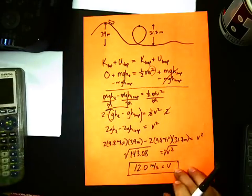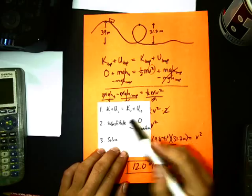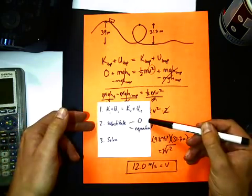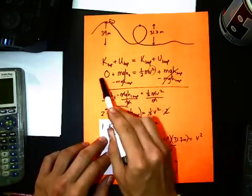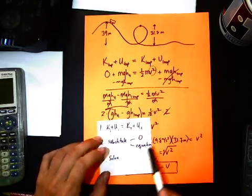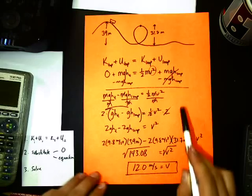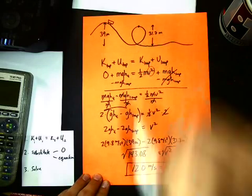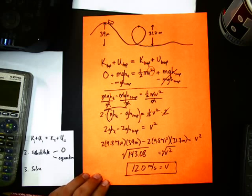So again, the steps were the same, kinetic and potential. We start off with our conservation mechanical energy, substitute in zeros or the equation. So we did that here. And then just do some algebra and solve. Be careful with the algebra on this one. And you get 12.0 meters per second. That is how fast you are going when you're on that loop.